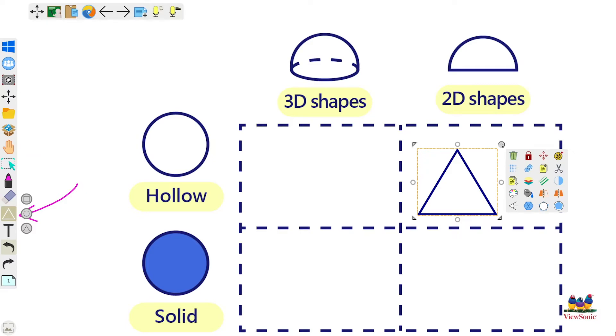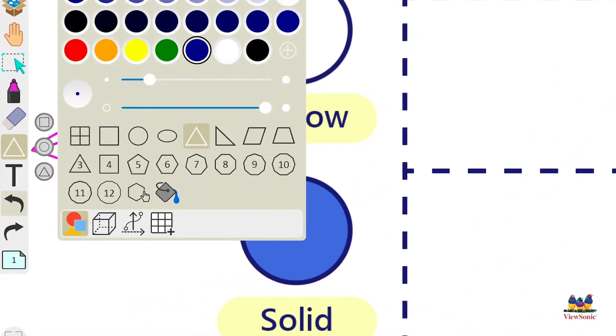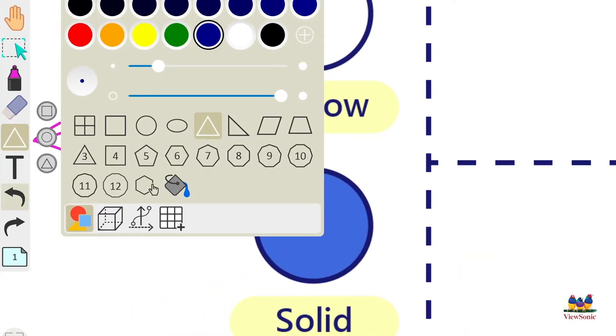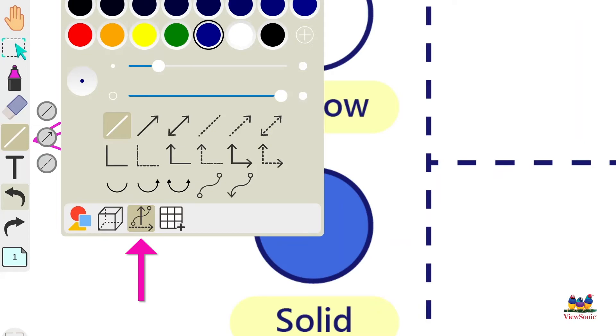Now if we want to draw another shape, what we need to do is go back to our shape tool, click on it again, and then that will open up the shape menu. We can draw other shapes other than 2D shapes, like 3D shapes. We can also draw lines, so if you want to draw arrows or straight lines, you can do that there as well.